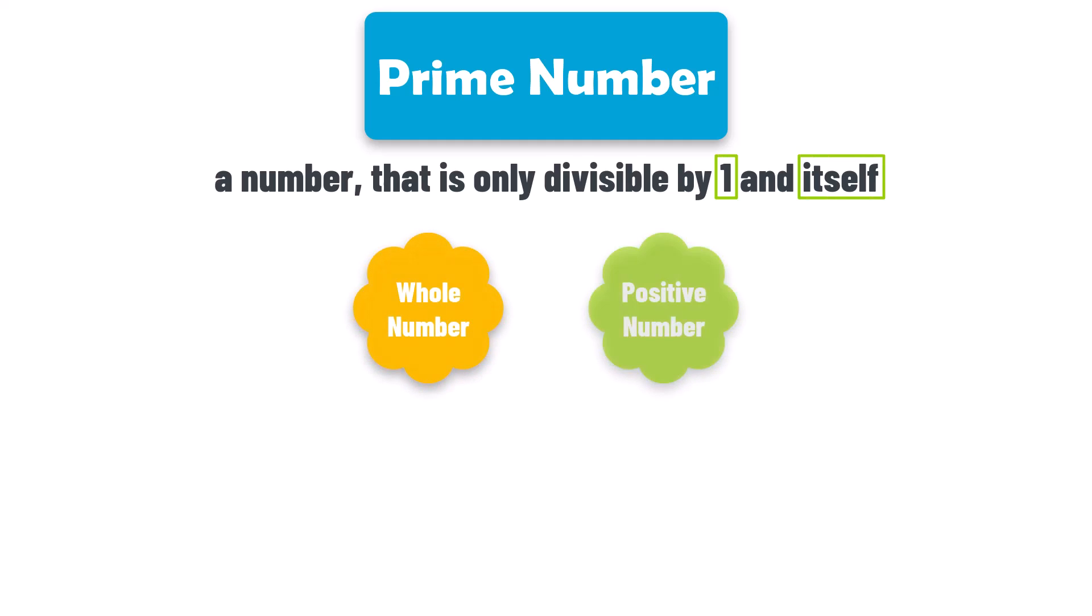What is a prime number? A prime number is a number that is only divisible by one and itself. In other words, a prime number has exactly two positive divisors, one and the number itself. Prime numbers must be whole numbers and positive numbers.